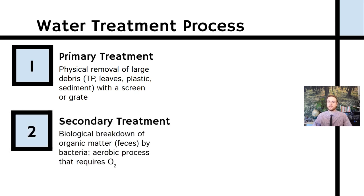Step two, or secondary treatment, is a biological treatment. This is the use of microbes or bacteria to actually break down a lot of the organic waste. The microbes will digest fecal matter and materials in the urine using oxygen — it's aerobic decomposition. So it's really important that we actually add oxygen to this step, and we'll talk about that when we get to our diagram.